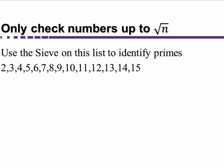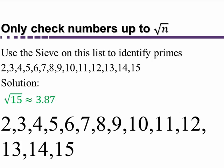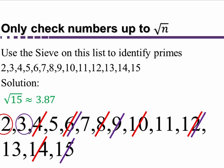Let's do one more — the list from 2 to 15. Again, we look only up to the square root of the largest number, the square root of 15, which is about 3.87. Here's our list: we circle the 2 and cross off multiples of 2, and we circle the 3 and cross off multiples of 3. And that's all we have to do. Everything else that's left is going to be prime. That's the way the Sieve of Eratosthenes works.